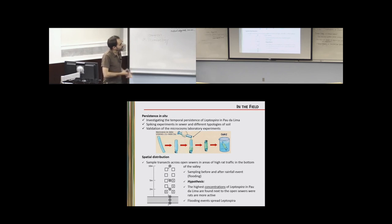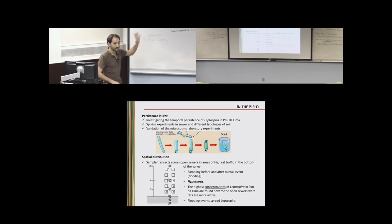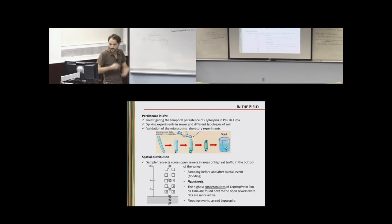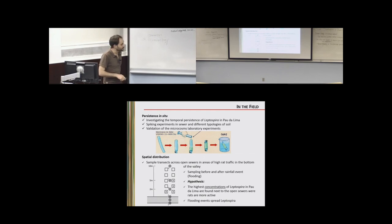In the field we are also trying to validate lab results with in situ experiments, investigating the persistence of Leptospira in the slum community. We're doing spiking experiments using dialysis tubing — filling them with a set concentration and placing them at different areas of the community — to assess under real conditions of temperature, rainfall events, and sunlight exposure the true persistence of pathogenic Leptospira. We're also sampling soil along a transect near an open sewer, hypothesizing higher Leptospira concentrations where rat activity is greatest, decreasing with distance.